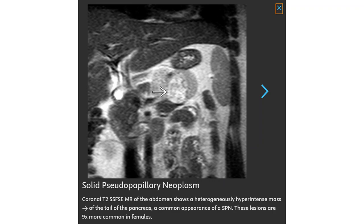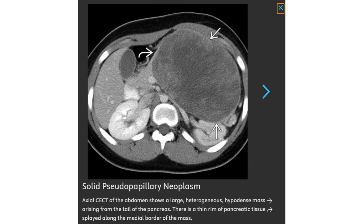Coronal T2 SFSE of the abdomen shows a heterogeneously hyper-intense mass of the tail of the pancreas, a common appearance of a solid pseudopapillary neoplasm. These lesions are 9 times more common in females. Contrast CT of the abdomen shows a large heterogeneous hypodense mass arising from the tail of the pancreas, with a thin rim of pancreatic tissue splaying along the major border of the mass.